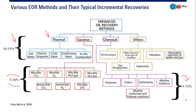Thermal oil recovery is quite successful, followed by chemical treatment and gaseous methods. Among all methods, the most popular are miscible CO2, immiscible CO2, continuous vapor, and alkaline-surfactant-polymer (ASP) solutions, while many others are still in the study or R&D stage.